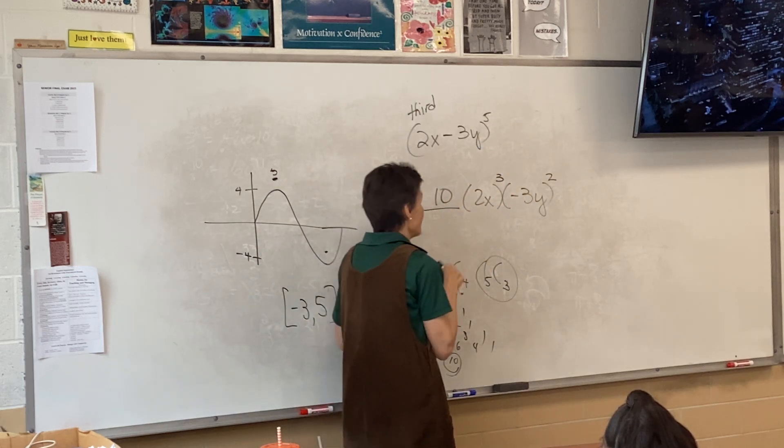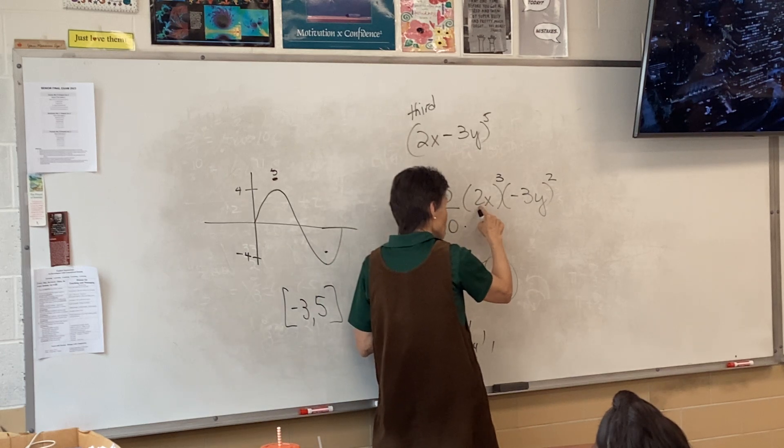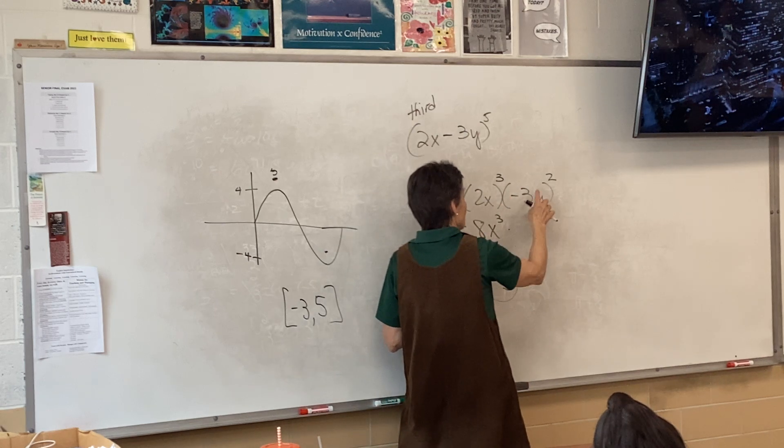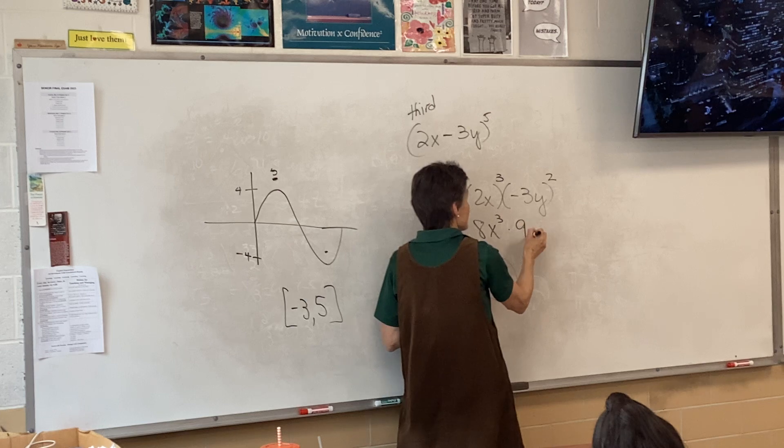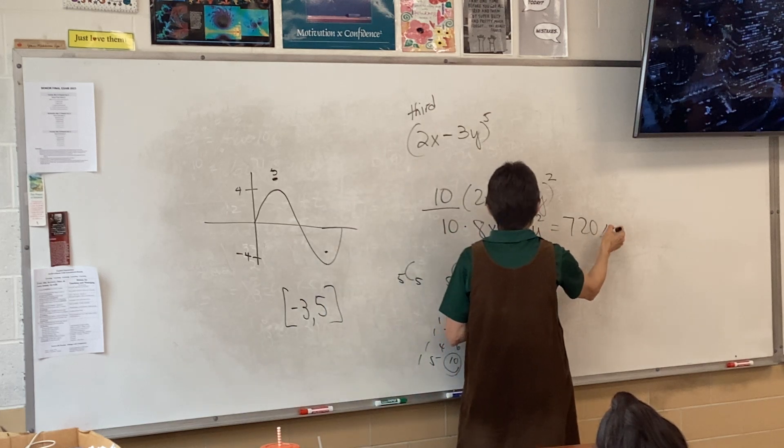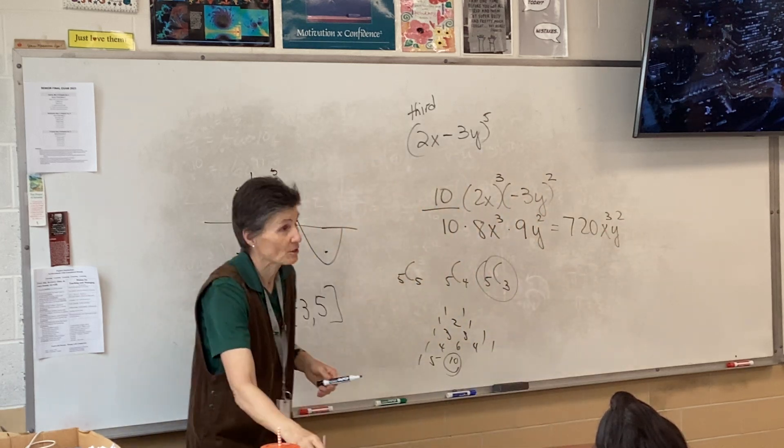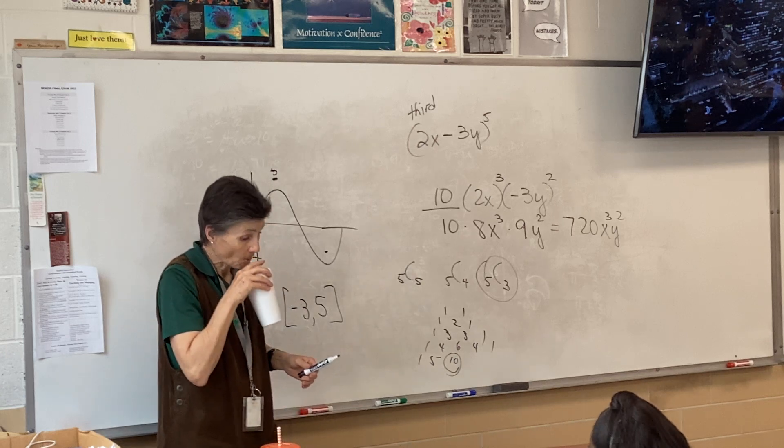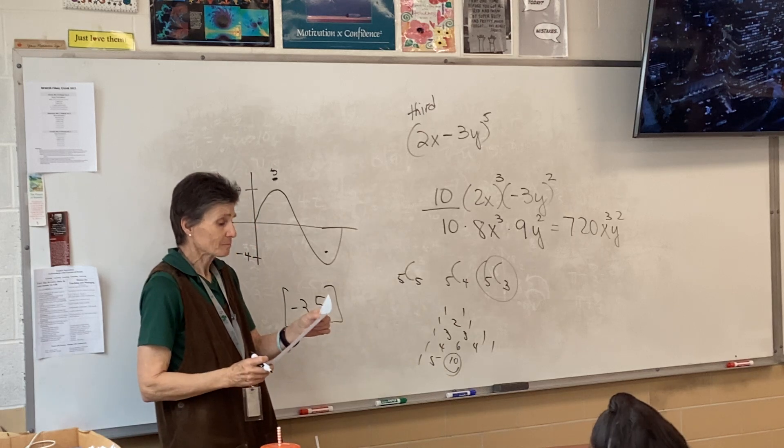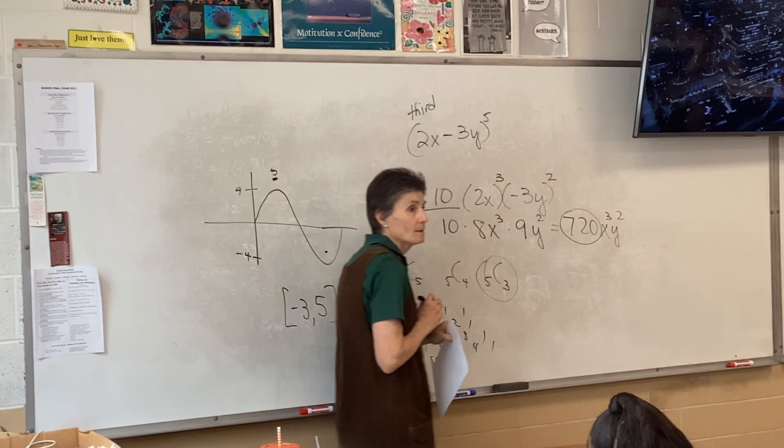Then I simplify. This is where I need my calculator. So I have 10 times 2 to the third, which is 8, and then negative 3 squared, which is 9. I guess I don't need my calculator. 720 x cubed y squared would be the third term of the expansion. It says what's the coefficient? The coefficient would be 720.